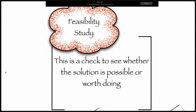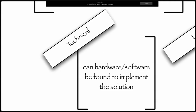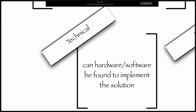Is it feasible? It's quite common sense really when we think about it — the word feasible means is it worth doing? So there are a number of different ways we can look at feasibility. One of the first ones is technically: is it feasible? Can the hardware and software be found to implement the solution? That doesn't necessarily mean does the company have the hardware and software — it just means is it actually possible to solve the problem with hardware and software that is currently available?